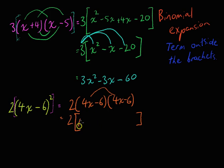4x times 4x is 16x squared. Outer, negative 6 times 4x is negative 24x. Inner, same again, negative 24x. Outer, negative 6 times negative 6 is positive 36.